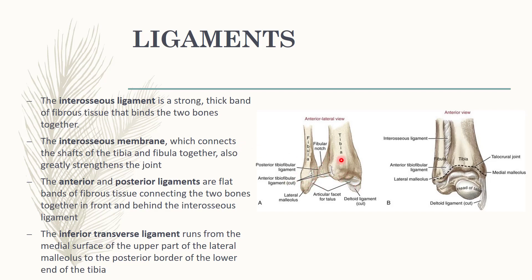There are also anterior and posterior ligaments of the inferior tibio-fibular joint. Here you can see the cut ends of the anterior tibio-fibular ligament, and there is also the posterior tibio-fibular ligament. They are flat bands of fibrous tissue connecting the two bones together in front and behind the interosseous ligament, as the interosseous ligament is positioned between the anterior and posterior ligaments.